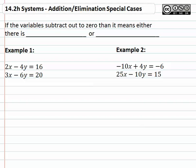Similar to what we saw with substitution, if the variables subtract out to zero, it means there is either no solution.